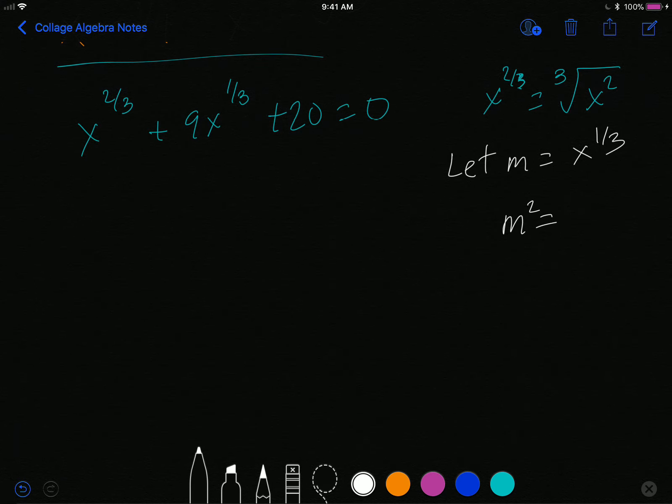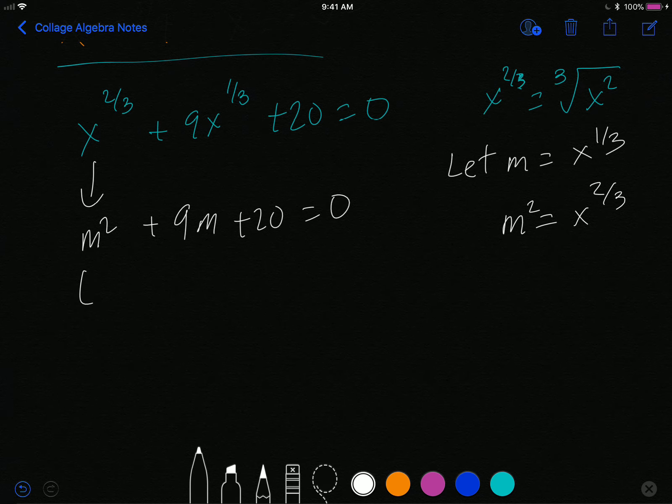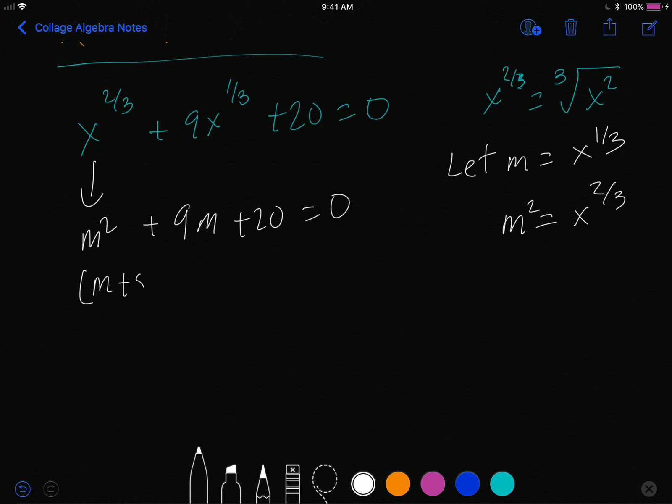Then m squared would be equal to x to the two-thirds. And with that being here, this is m squared, 9m plus 20 equals zero. And then I can solve my equation. And so this factors, I think, in 5 and 4. m plus 5 times m plus 4 is zero. So m equals negative 5. And m equals negative 4.